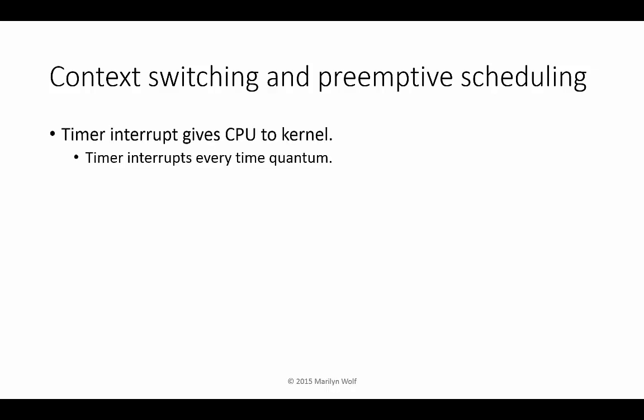Context switching uses a timer to interrupt the currently executing process periodically. That returns control from that process to the kernel. The timer interrupts every time quantum. At that point, the kernel decides what task to run next.